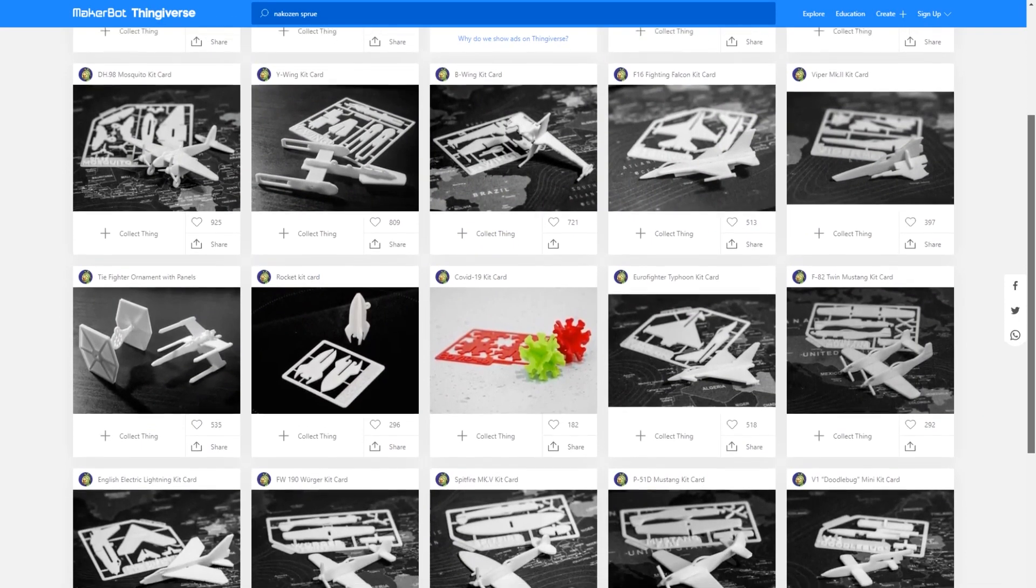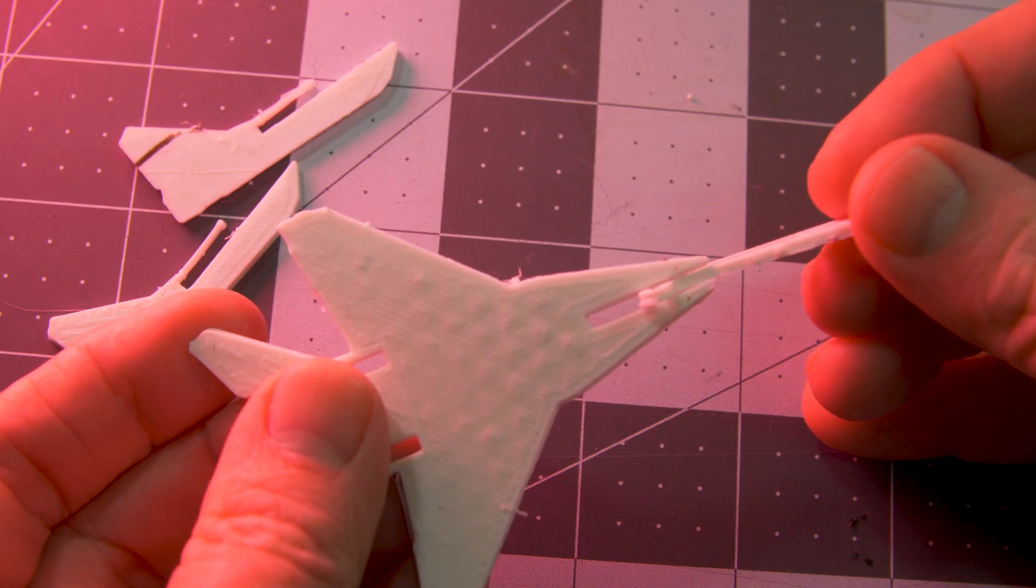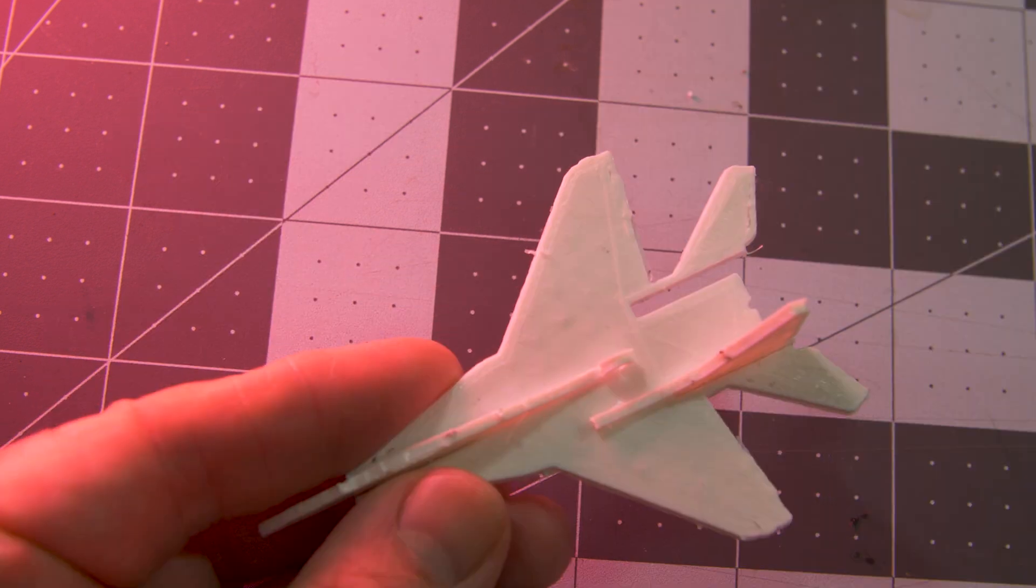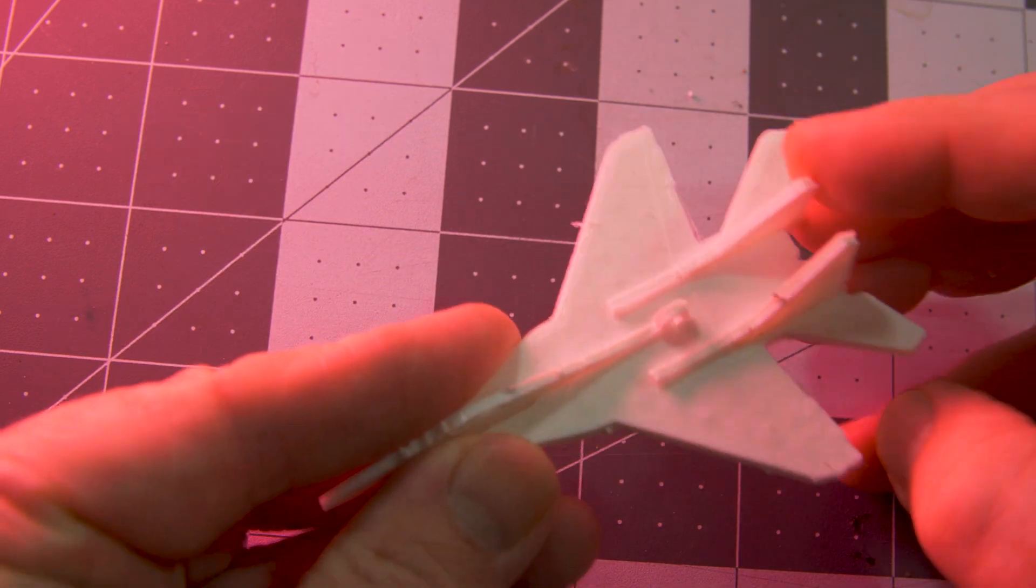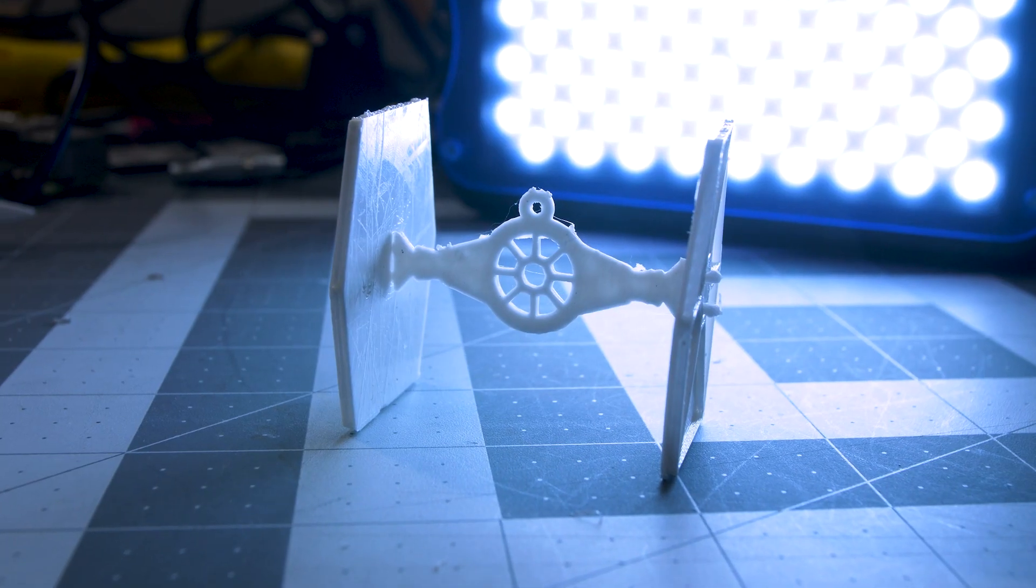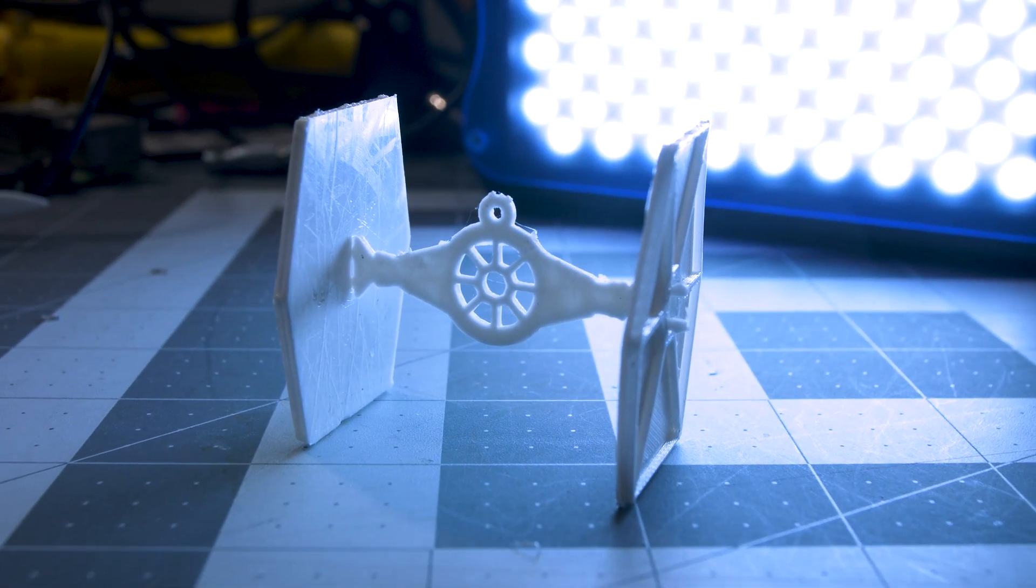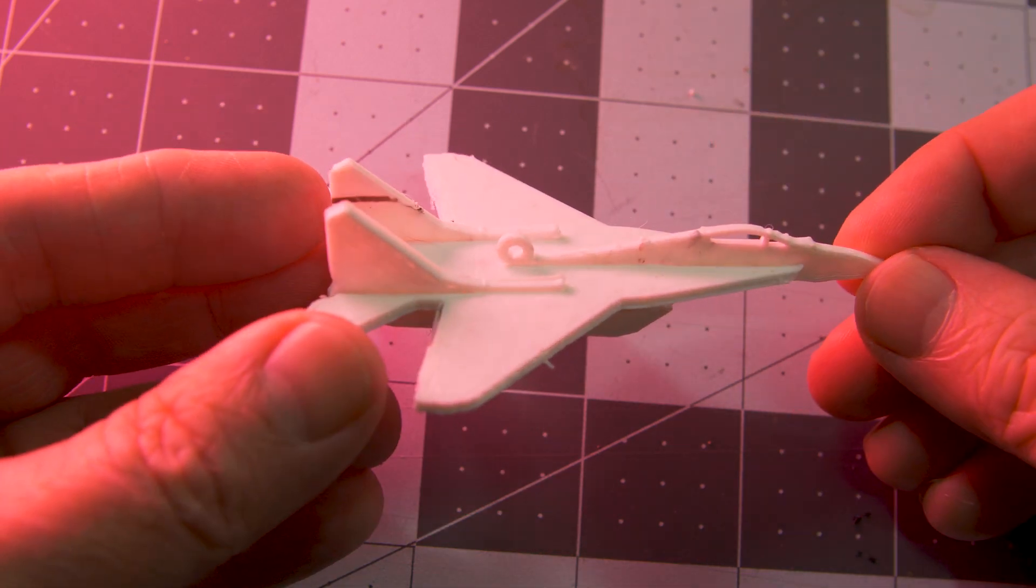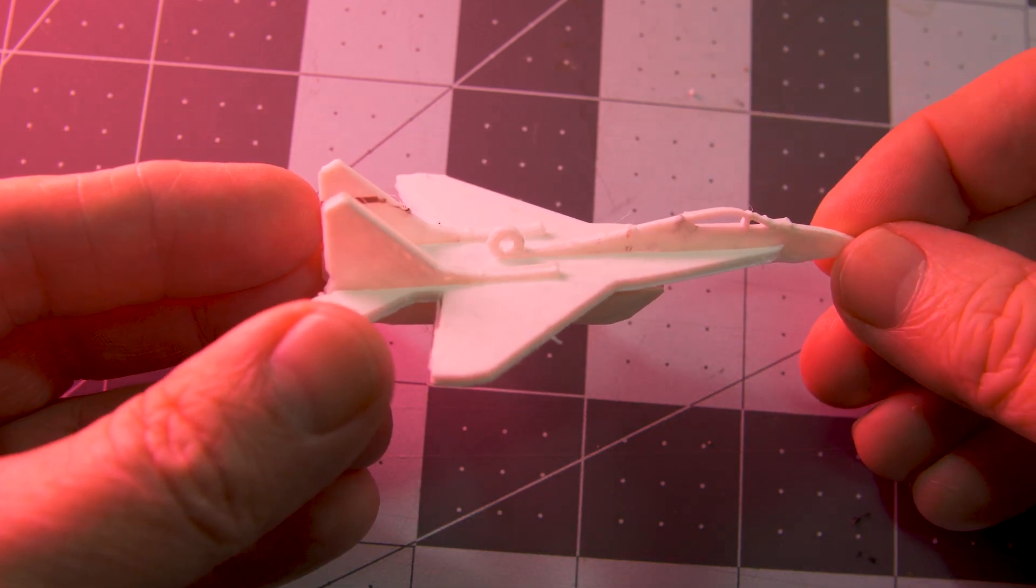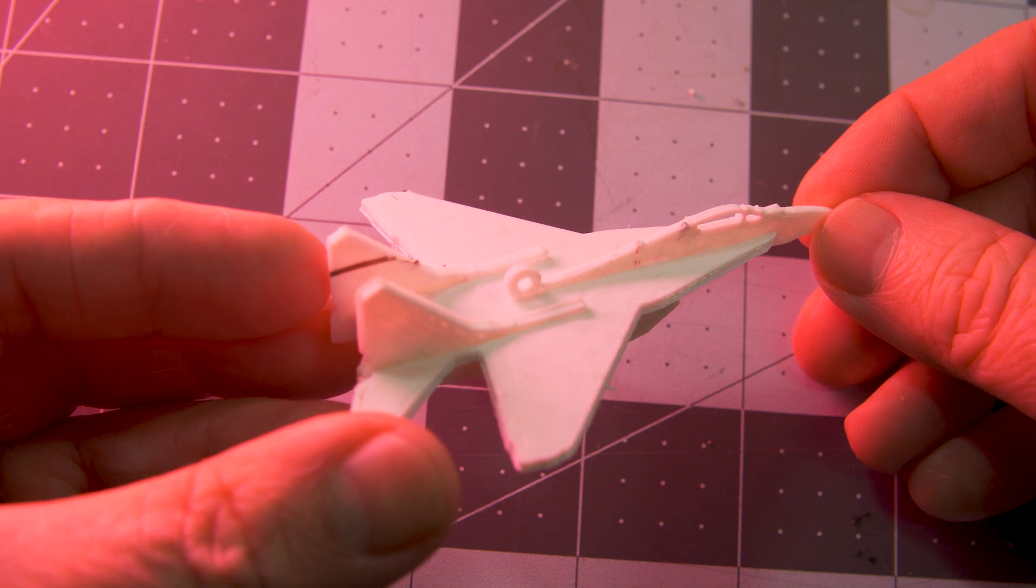On Thingiverse, Pitoskido aka Nakozen has been very busy uploading these tiny 3D printable model kits. Some are modeled after real planes and rocket ships, but there's also a lot of fun sci-fi ships here too. These are fun to make, quick to print, and a lot of them include an optional design with a loop built in to turn it into an ornament or something that you can hang from your ceiling robot.